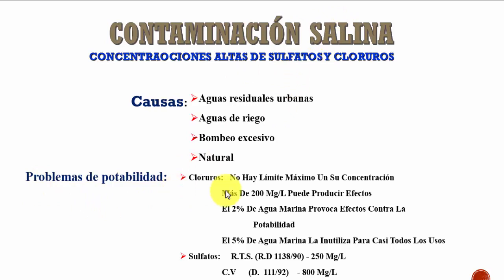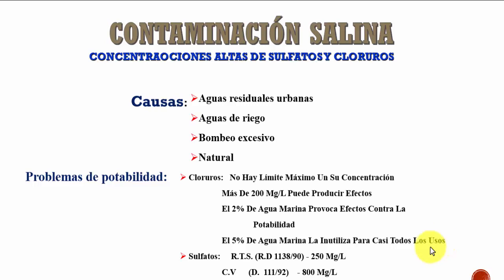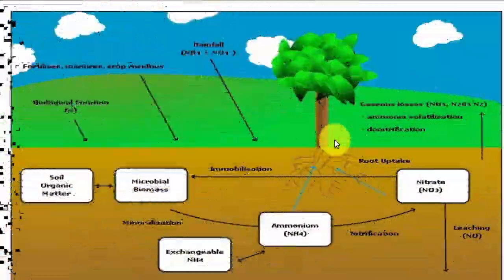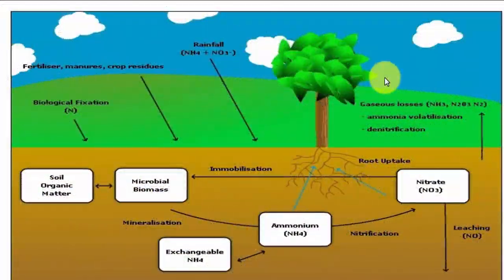Los problemas de potabilidad incluyen los cloruros: más de 200 mg/L puede producir efecto, el 2% de agua marina provoca efecto contra la potabilidad, y el 5% de agua marina la inutiliza para casi todos los usos. Con relación al sulfato, tenemos valores de referencia de 250 mg/L. Este caso muestra cómo ocurren los aportes de diferentes elementos que hacen que nuestro acuífero, en estado natural, no sea potable ni utilizable.